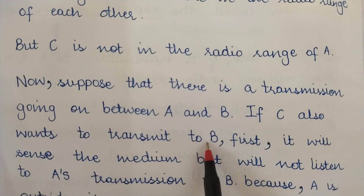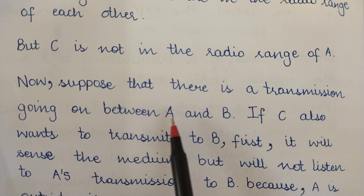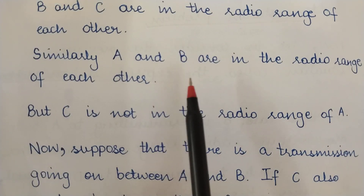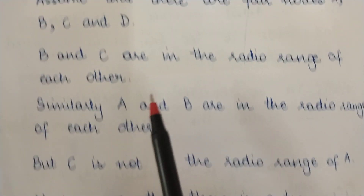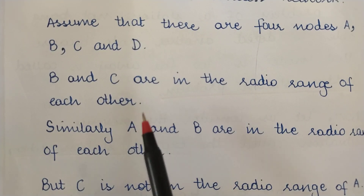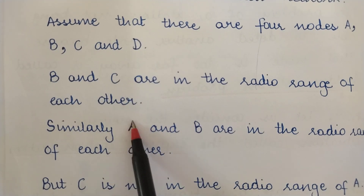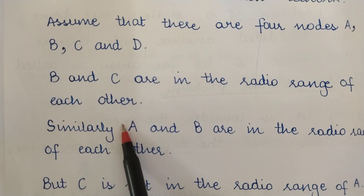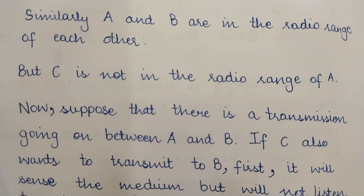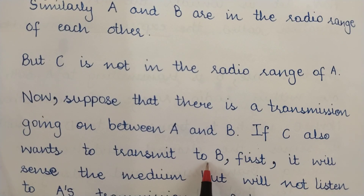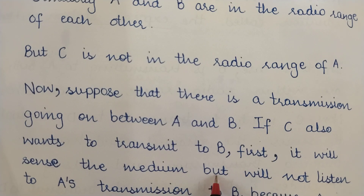If C also wants to transmit to B — C is not in the radio range of A, but C is in the radio range of B, and there is already a communication going on between A and B. So B is the common node: B can communicate with C as well as with A, but A and C cannot communicate with each other because they are not in each other's radio range. So if C also wants to transmit to B, first it will sense the medium.